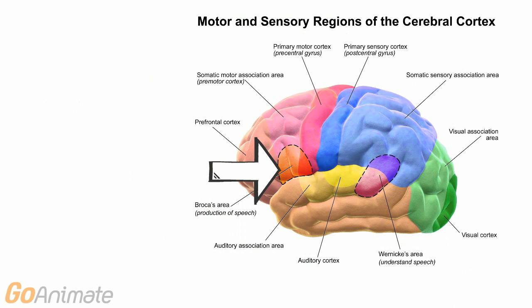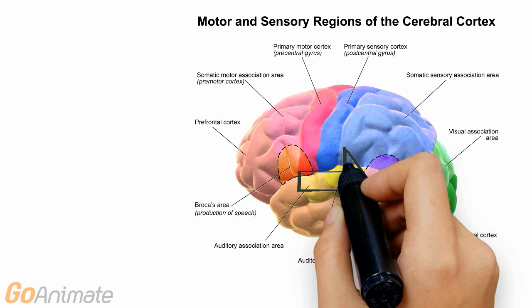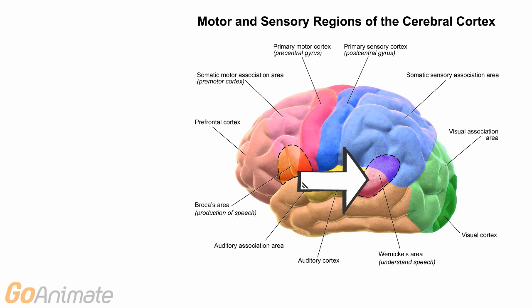Here are a couple of special areas in the brain. Broca's area is involved in language production and comprehension. Wernicke's area is involved in speech recognition.